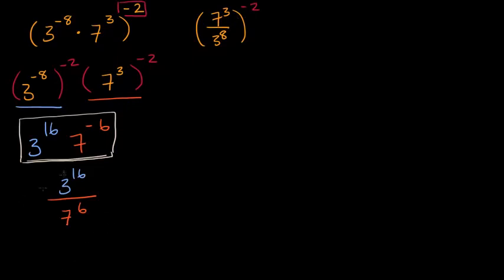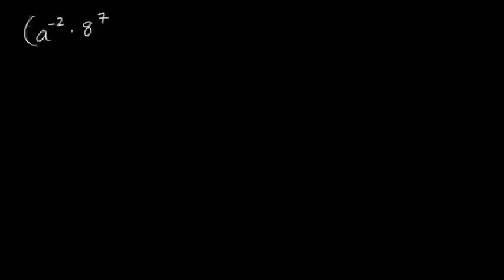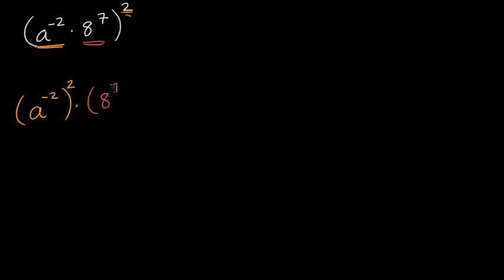Let's do another one of these. Let's say we have a to the negative two times eight to the seventh power, and we want to raise all of that to the second power. Like before, I can raise each of these things to the second power. So this is the same thing as a to the negative two to the second power, times eight to the seventh to the second power. Negative two times two is negative four, so that's a to the negative four, times eight to the seven times two, which is fourteen — eight to the fourteenth power.